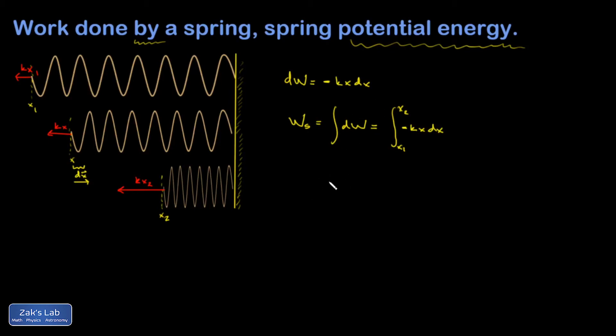It's not hard to guess the antiderivative here. It's negative one-half kx squared, evaluated from x1 to x2. And that gives me a negative one-half kx2 squared minus negative one-half kx1 squared.